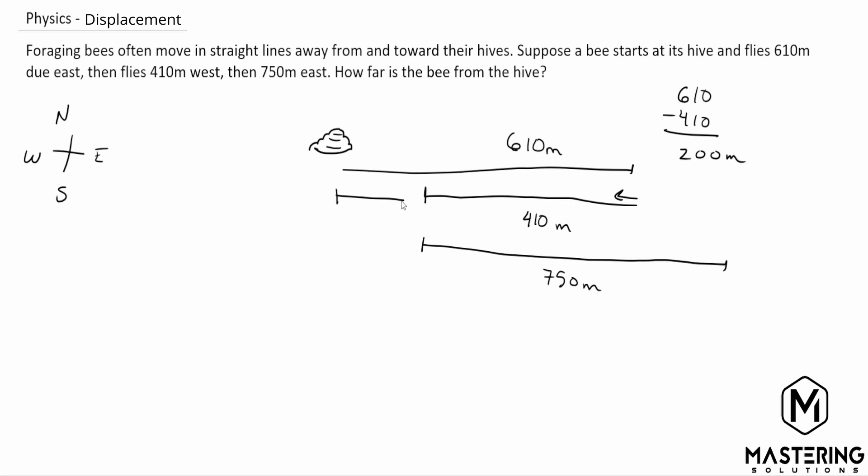And that gives us 200 meters. So right here, from this distance to here, the bee is 200 meters away from the hive. And then they say from this point,